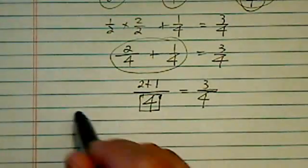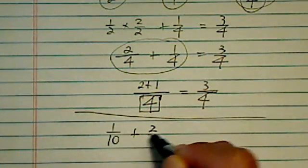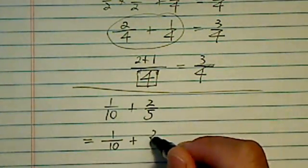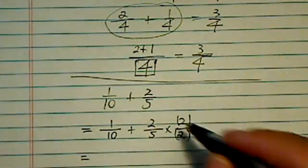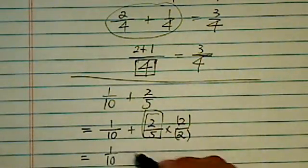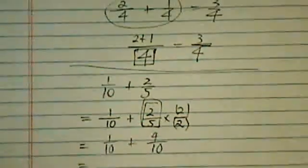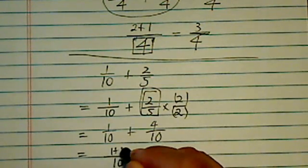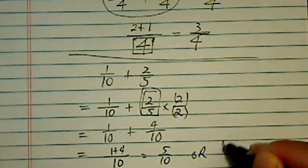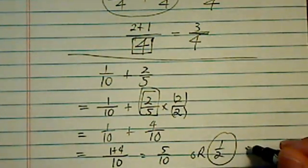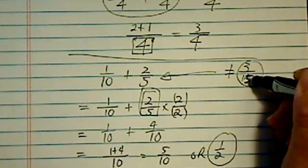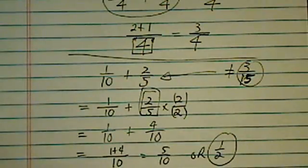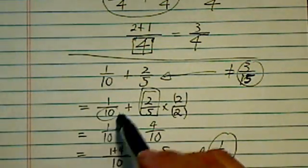Now, looking at the problem we started with — one over ten plus two over five — since we have to insist that when we add fractions the denominator has to be the same, by multiplying top and bottom by the same number, I'm ensuring I'm not changing the value of the fraction. So I have one over ten plus four over ten. Since the denominators are the same, now they're the same size: one plus four on top gives five over ten, which simplifies to one half. So this does not equal three over fifteen.